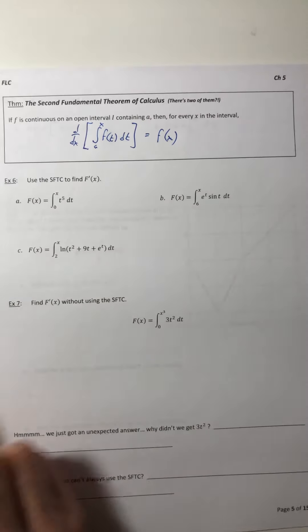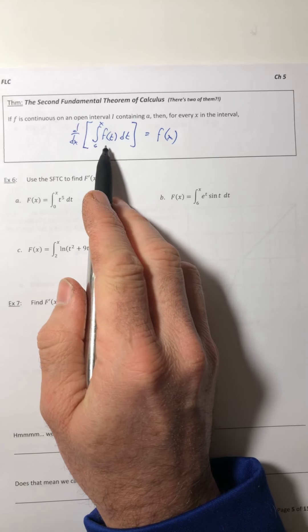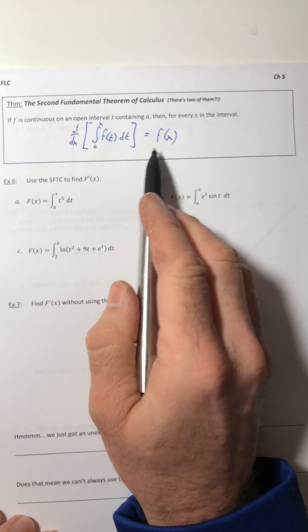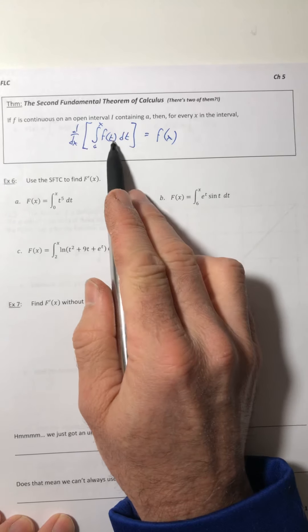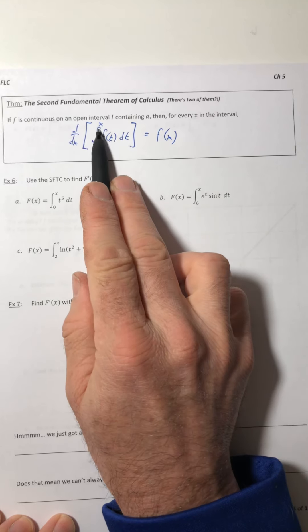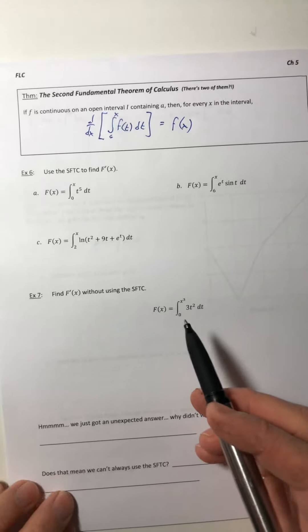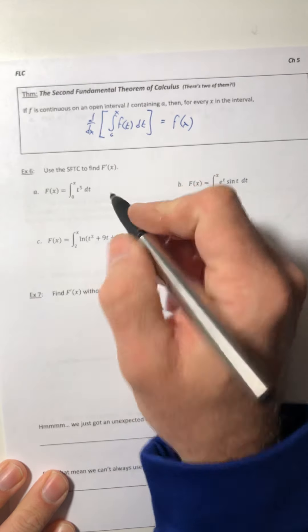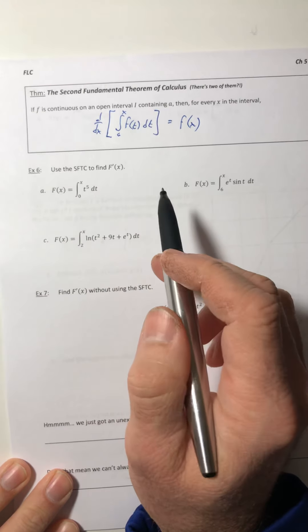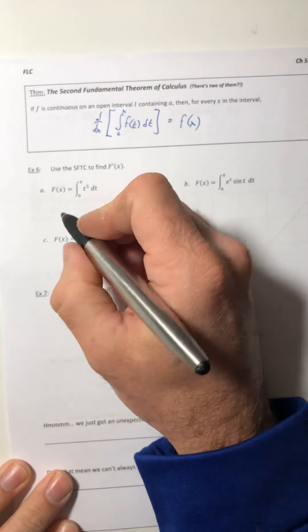So basically you have a derivative of a definite integral and you get right back to the function. But if you notice, the variable has been switched from t to whatever variable of the upper bound is, into that x. So it makes these pretty simple. It looks like it's going to be super complicated, but it really isn't.